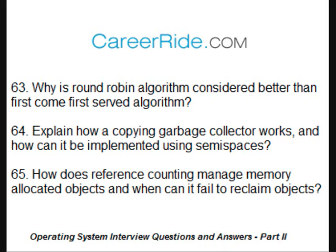How does reference counting manage memory-allocated objects, and when can it fail to reclaim objects? Reference counting augments every object with a count of the number of times it has been referenced. This count is incremented every time a reference is made, and decremented every time a reference is destroyed. Once the reference count reaches zero, the object can be reclaimed. Reference counting systems perform automatic memory management by keeping a count in every object. Any object with no reference count is considered dead and its memory is reclaimed. The reference counting method can fail to reclaim objects in case of cyclic references. It is always suggested to create an architecture that does not use a circular reference.